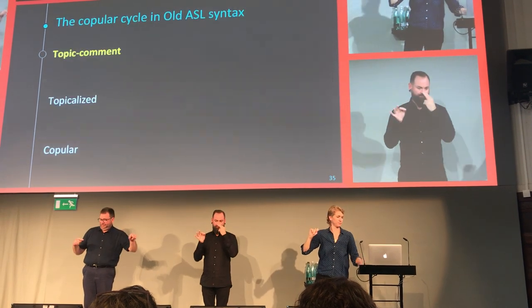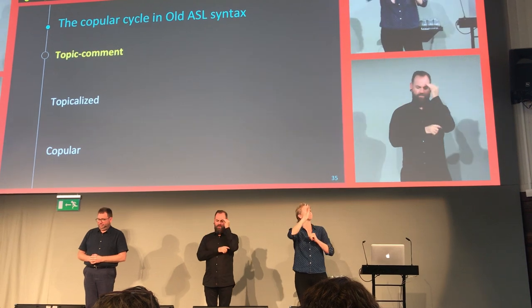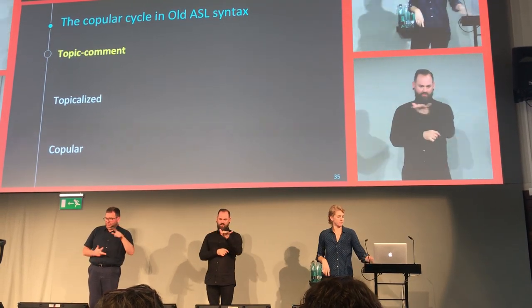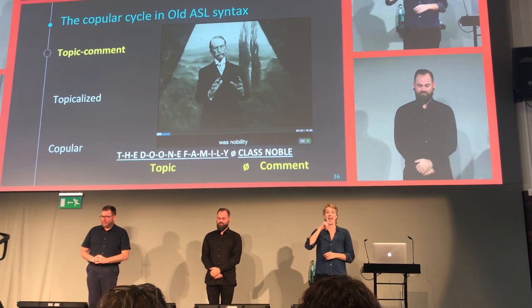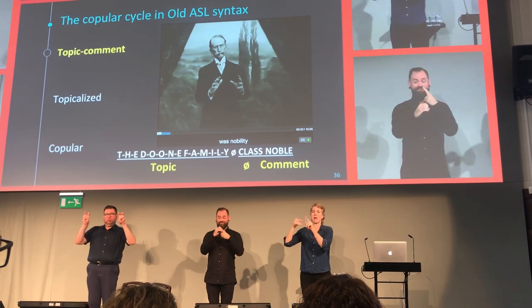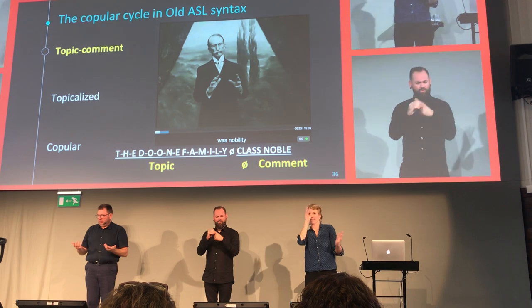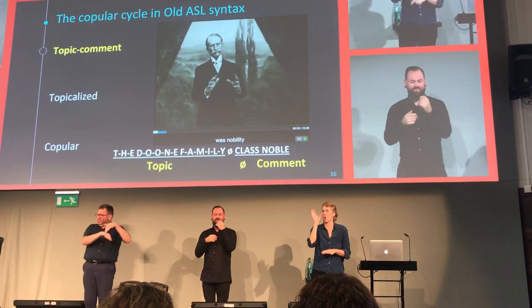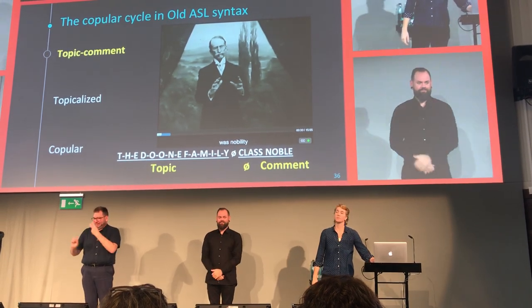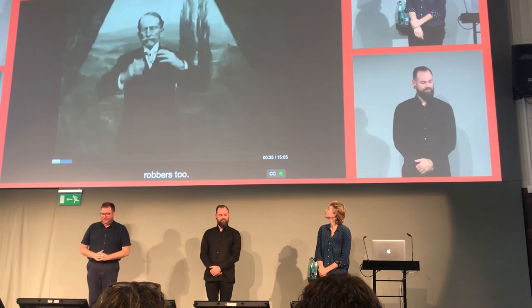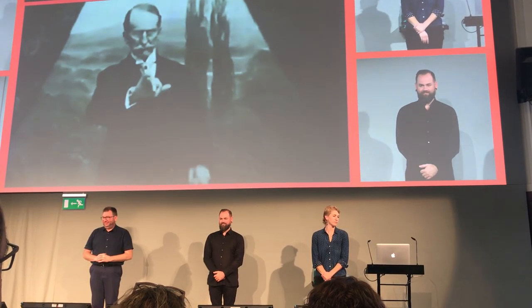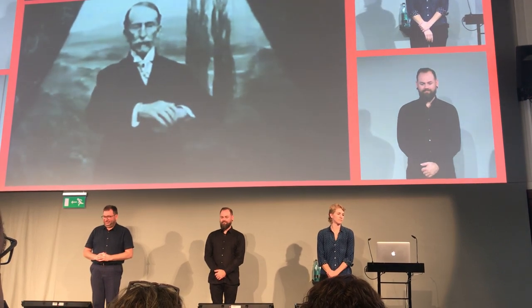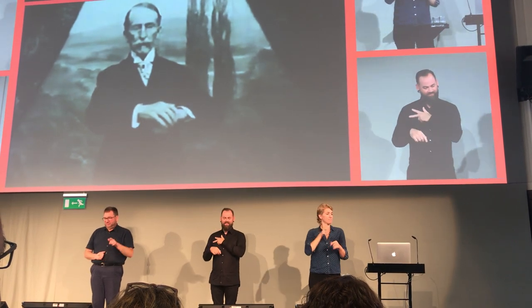We're going to move to the copula cycle and look at the syntactic context. Again we get these three structures: topic-comment, topicalized, and copular — all allowed in ASL. In old ASL, the Doom family is the topic, zero copula, and then the rest is the comment. If we inserted the copula, you might see a head nod instead. There is a slight head nod between 'the Doom family' and the pause, indicating the copula structure — they were nobles.